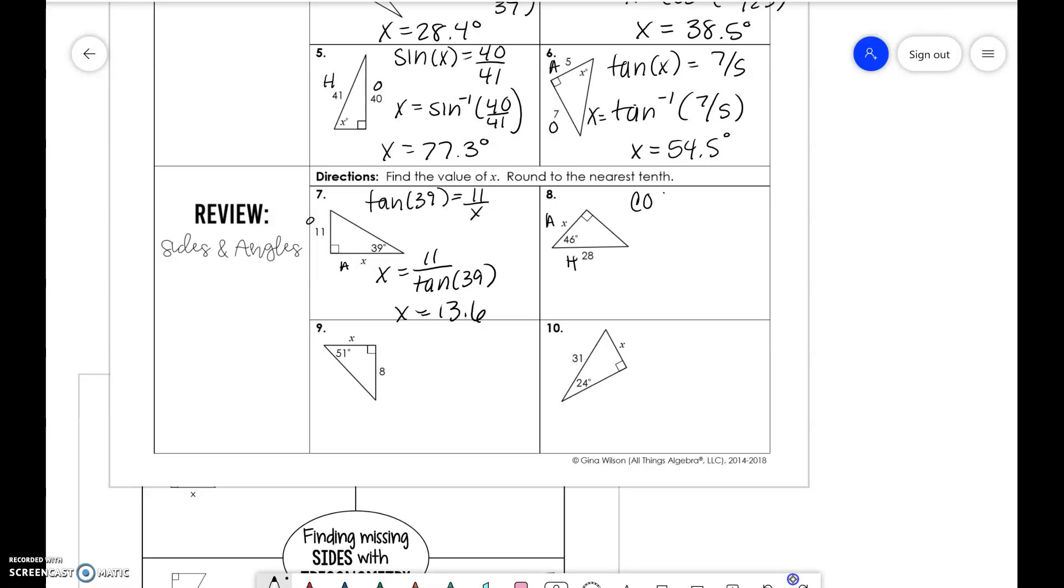Adjacent hypotenuse. So we have cosine of x is equal to x over 28. x is equal to 28 cosine of, oh I'm sorry, this should be 46. So x is equal to 19.5.